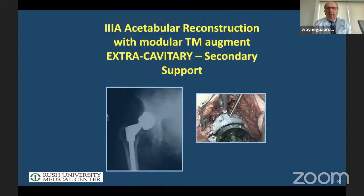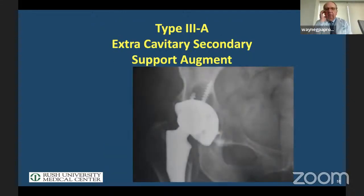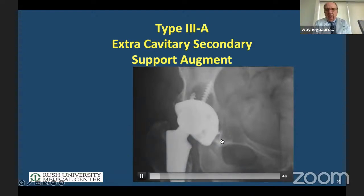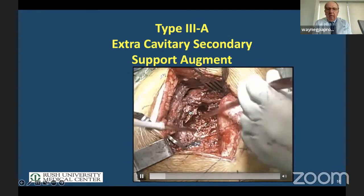When we have larger defects it's still secondary support, but now we flip the augment over. We can't put it inside the cavity because there's not enough supporting bone, so we put the augment upside down. Even though there's a lot of lysis, we can still see a teardrop, so we'll be able to bring the hip center down.